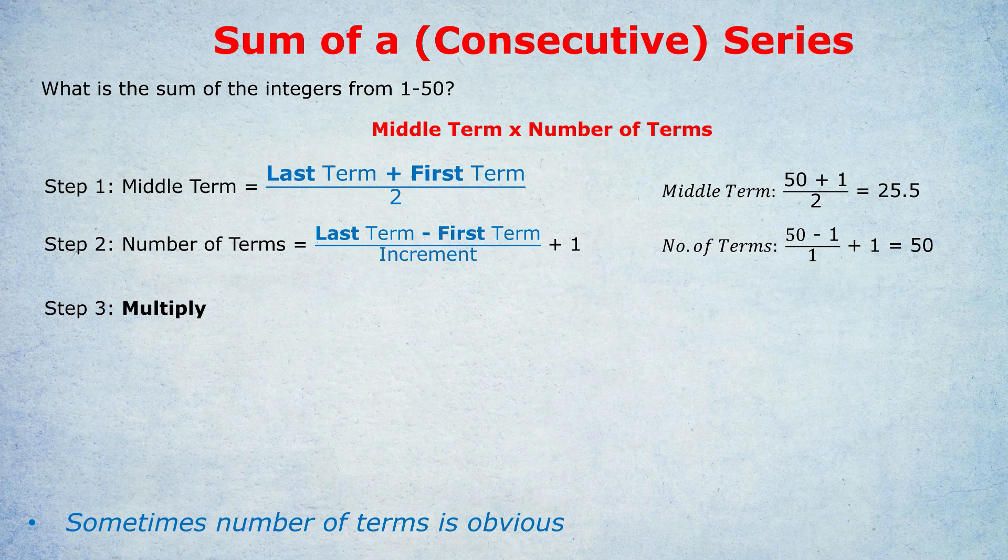And as I've written at the bottom, sometimes the number of terms is obvious. If you see a question like this, and you've remembered my core formula, middle term times number of terms, then yes, you can skip the formula if you realize instantly that there's 50 terms. So the number of terms is 50. But if you're ever not sure, use the formula, which you have to memorize, to find the number of terms. So there are 50 terms from 1 to 50.